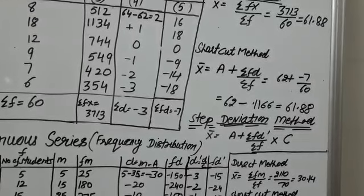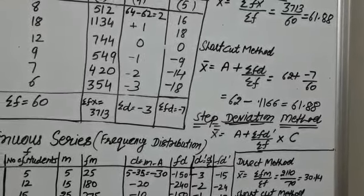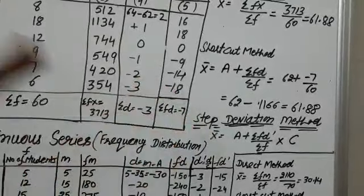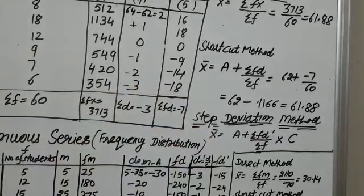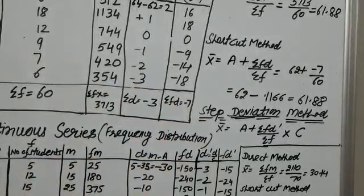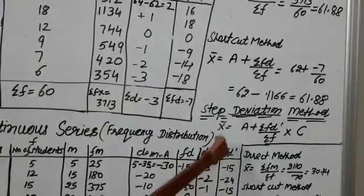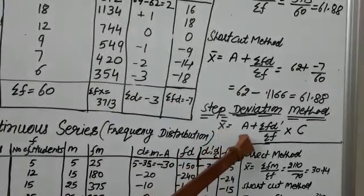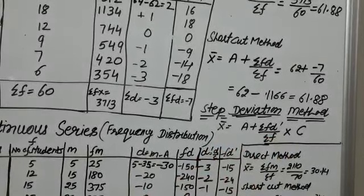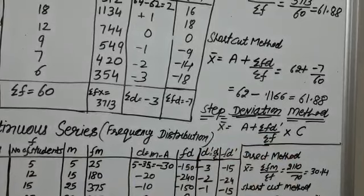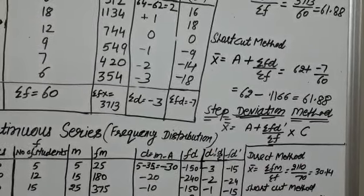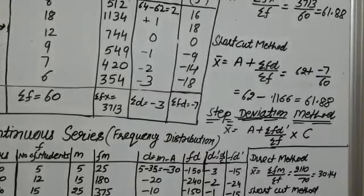There is one more method to calculate arithmetic mean — the step deviation method. Since this numerical cannot be calculated by step deviation method, the formula for that is x̄ = a + (sigma fd' / sigma f) × c, where c is the common factor. We will take the common factor and divide the deviation by it.